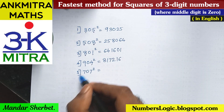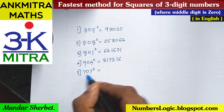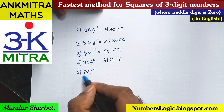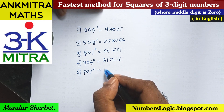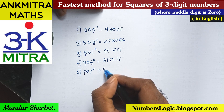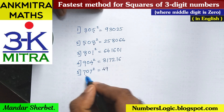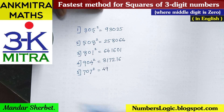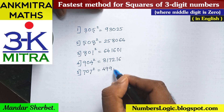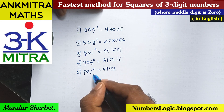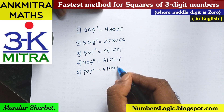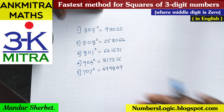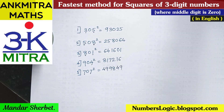For the fifth example, both end digits are 7. Square of 7 is 49. Then 7 multiplied by 7 is 49, and double of 49 is 98. At the end, square of 7 is again 49. So we get 49, 98, 49 — and the answer is ready: 707 squared is 499849.